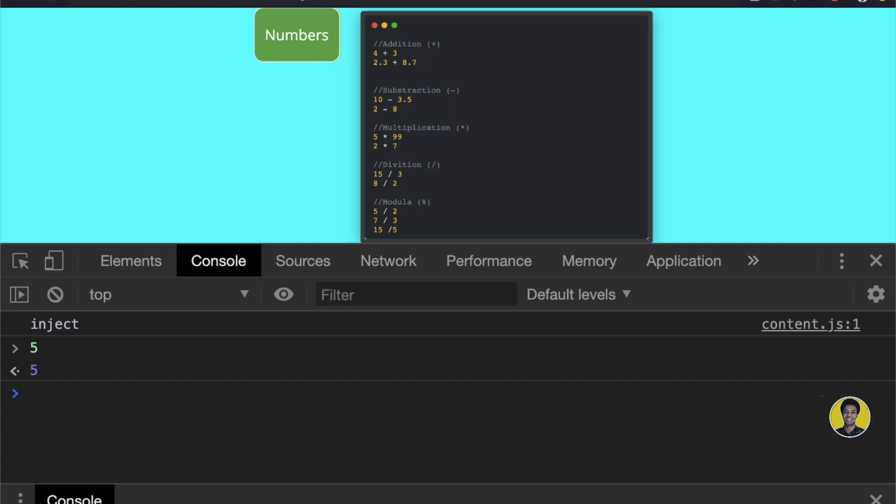If I write a number here, it returns that number. If I write 4 plus 3 and press enter, it returns 7. Let's try with decimals: 5.4 plus 3.3.